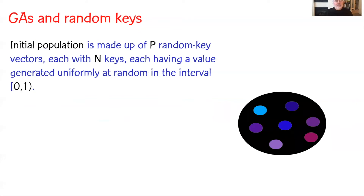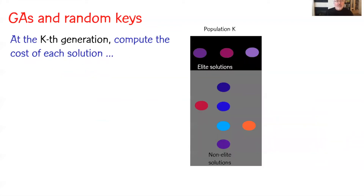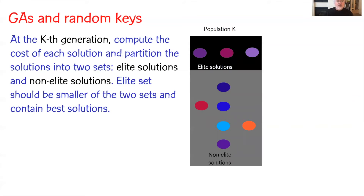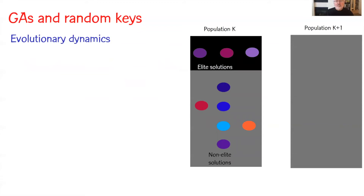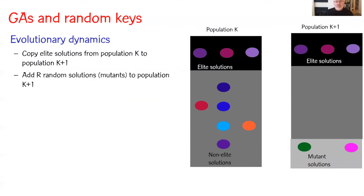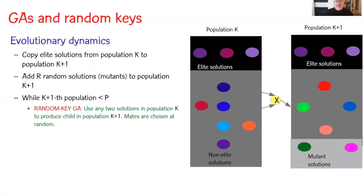The algorithm begins with an initial population made up of p random key vectors, each with n keys, each having a value generated uniformly at random in interval 0, 1. At the k-th generation, we compute the cost of each solution and then partition the solution set into two sets: an elite set and a non-elite set. The elite set should be the smaller of the two and contain the best solutions. As we produce population k+1, we copy without modification all elite solutions from population k. Then we introduce a set of mutants, and complete the population by mating parents from population k and inserting the resulting children into population k+1.